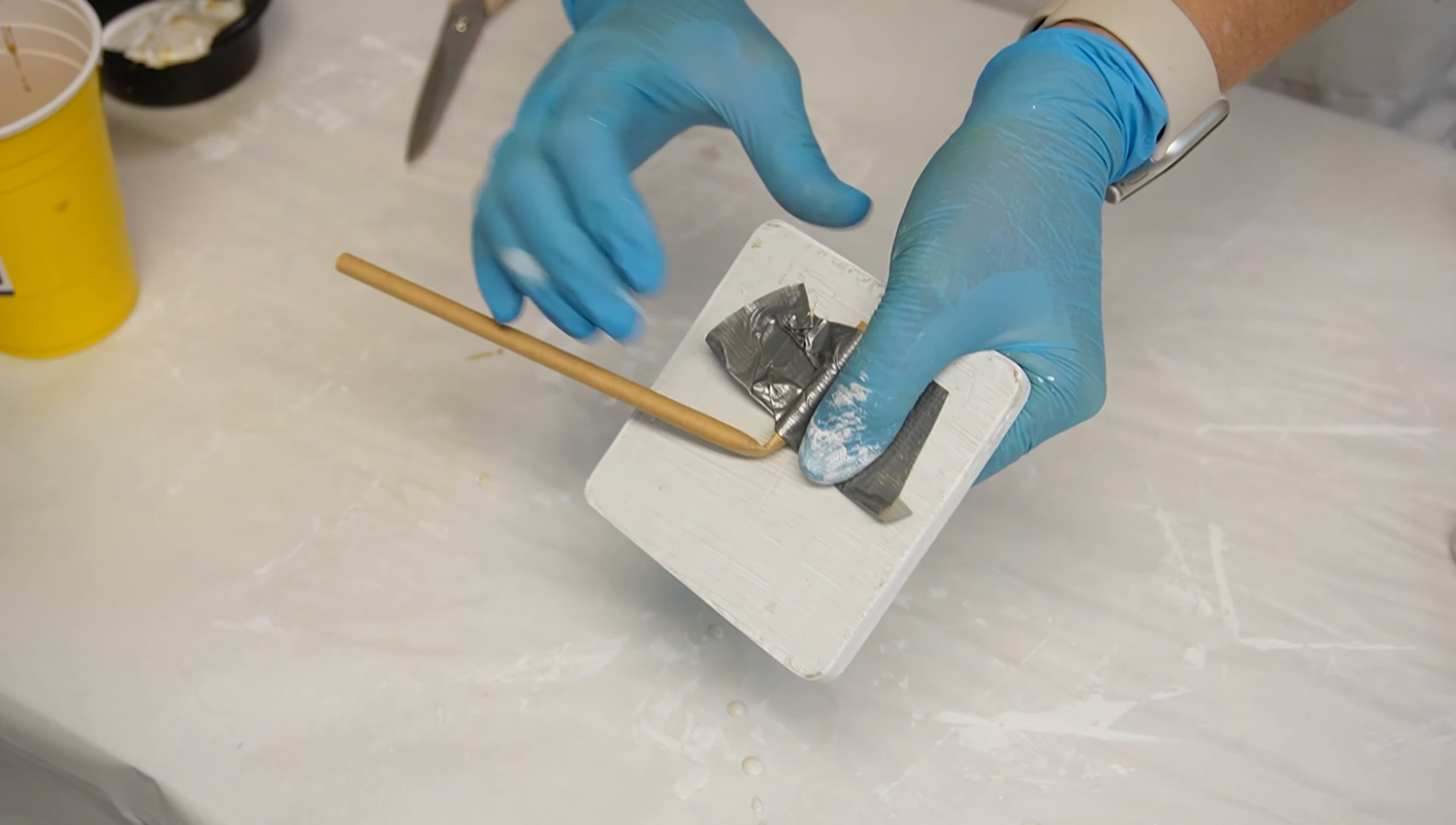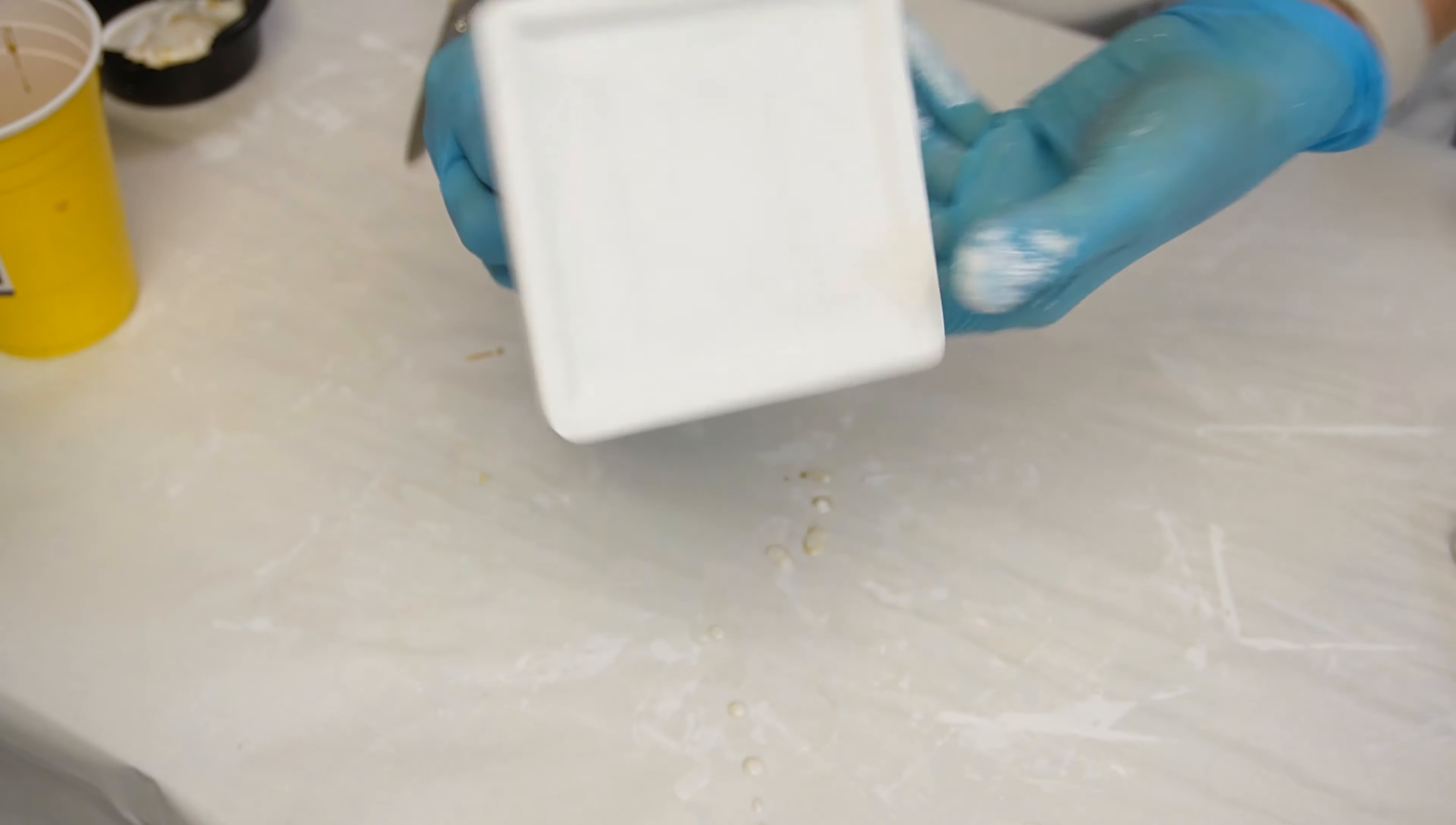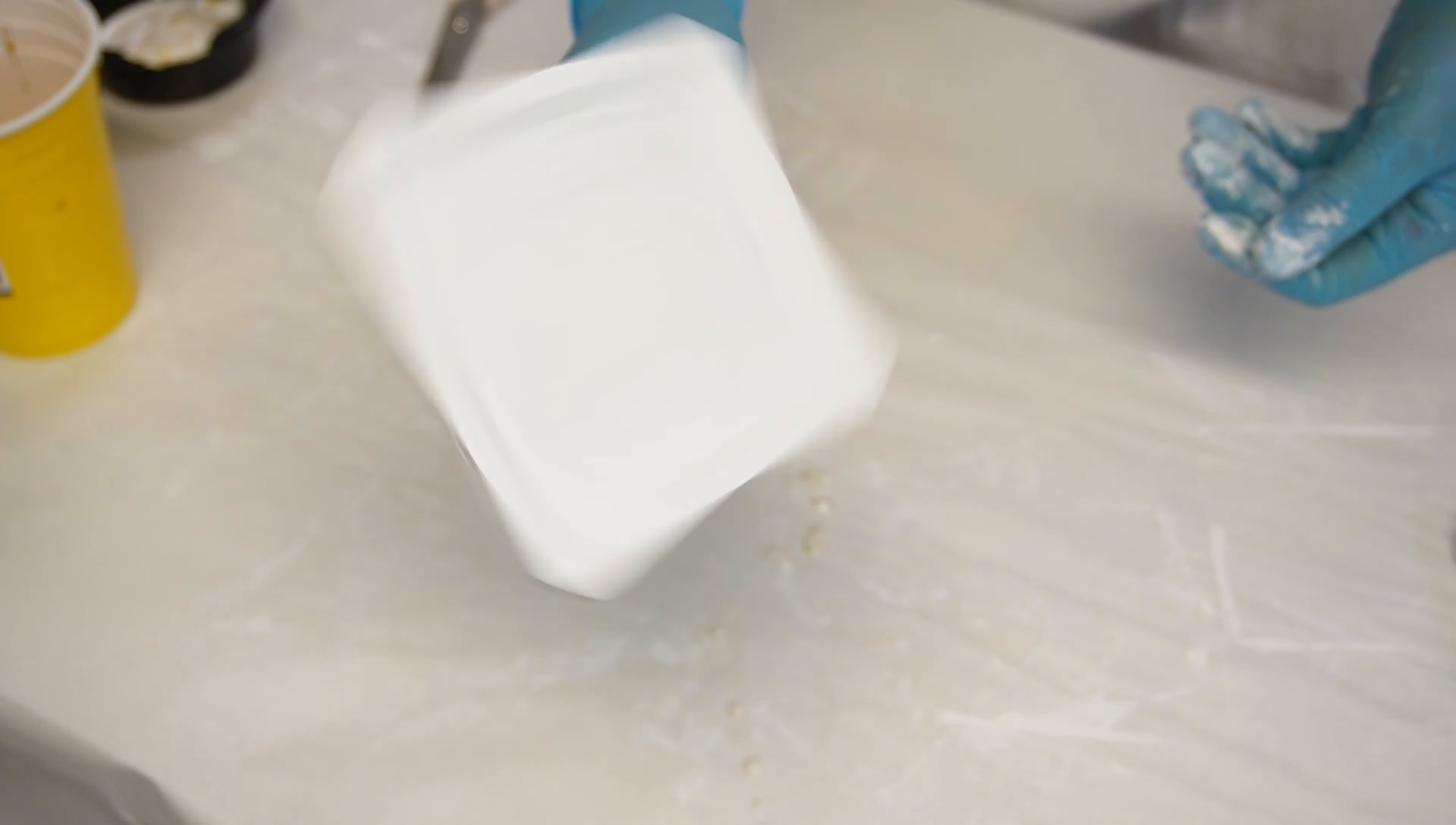So I made a makeshift handle out of paper straws and duct tape. Duct tape works for everything. All I did was I bent the straw and then duct taped it on to the back and it gave me a little handle to hold on to the coaster.